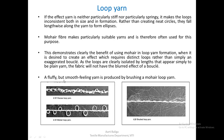There is an extra process — brushing — that can produce a brushed loop yarn by opening out the loops. A fluffy but smooth-feeling yarn is produced by brushing a mohair loop yarn, though the loops no longer remain in the structure after brushing.